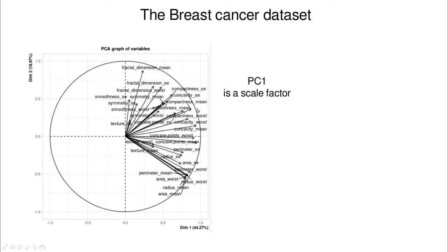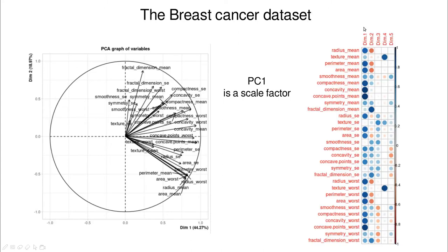In this case, you can see that PC1 is a scale factor — or a size factor — meaning that all the variables are represented in that dimension. So it's not a very useful component if you want to classify each variable. Looking at the first column of dimension one in the correlation diagram, you can see that almost all the circles are blue and large. The problem is that you have tons of variables which are large, so you cannot tell groups apart — all of them are almost equally relevant to understand PC1.